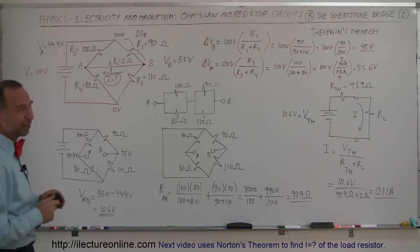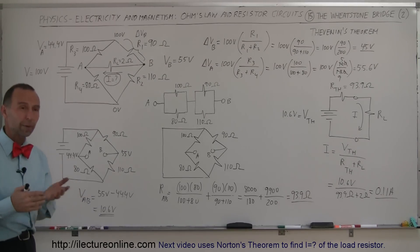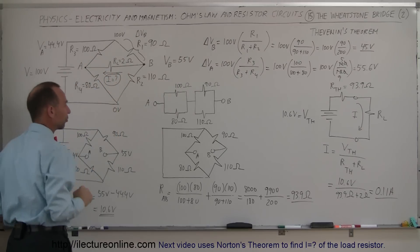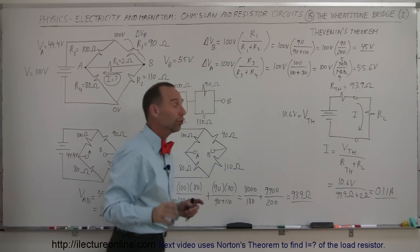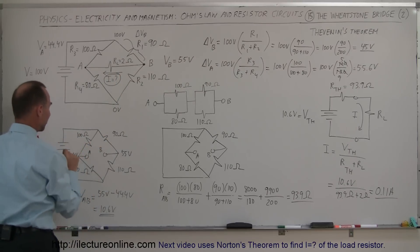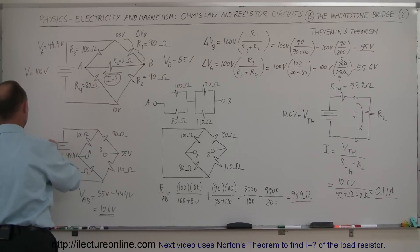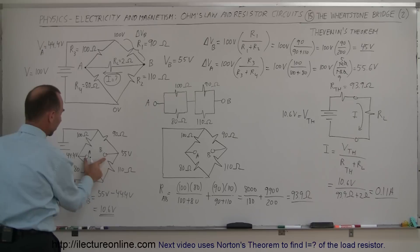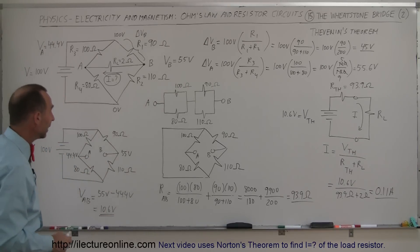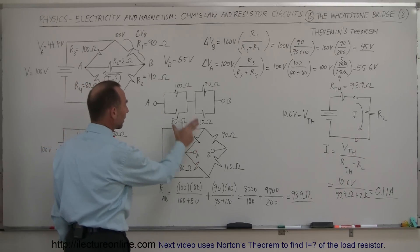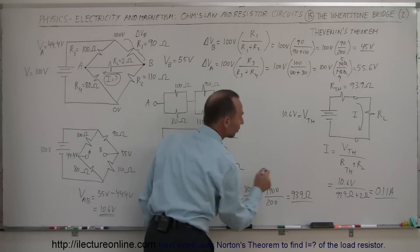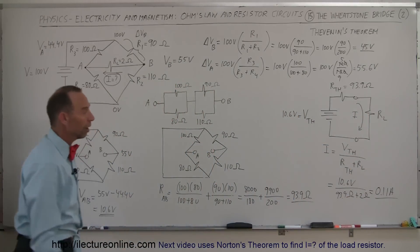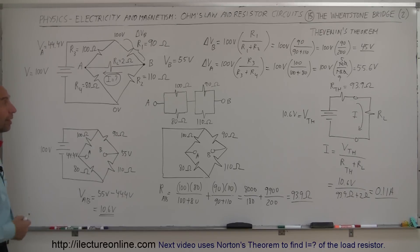This is actually pretty neat, because otherwise this would be a very difficult problem — we'd have to use Kirchhoff's rules and probably end up with six equations and six unknowns. Instead, we found the Thevenin equivalent circuit of the bridge circuit: a voltage and a resistance. To find the voltage, remove the load resistor and find the open-circuit voltage from A to B — the difference in voltage drops on each side, which was 10.6 volts. Then short the battery and find the equivalent resistance of 93.9 ohms. Plug into the Thevenin circuit with the load resistor and use Ohm's law to get the current. That's how we apply Thevenin's Theorem to the Wheatstone Bridge.